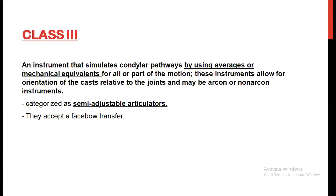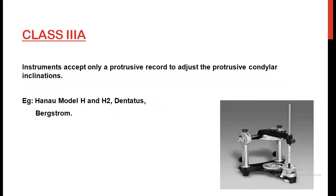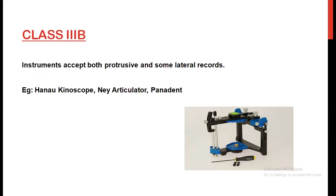Class 3 is an instrument that simulates condylar pathways by using averages or mechanical equivalents for all or part of the motion. These instruments allow for orientation of the cast relative to the joints and may be arcon or non-arcon instruments. It can be categorized as a semi-adjustable articulator and can accept a facebow transfer. Class 3A instruments accept only a protrusive record to adjust the protrusive condylar inclination. Examples: Hanau, model H and H2, Dentatus articulators, and Denar articulators. Class 3B instruments accept both protrusive and lateral records. Examples are Hanau Kinoscope, knee articulator, and Whip-Mix.